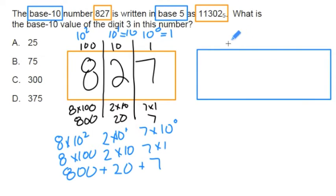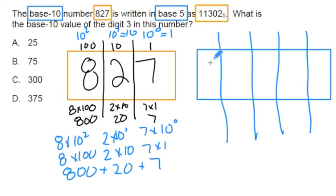There's 1, 2, 3, 4, 5 place values here. So I'm going to make 5 lines. It gives me the digits: we got a 1, a 1, a 3, a 0, and a 2. And guess what? We're looking for the 3-digit. What is the value of the 3-digit? The 3-digit here, which means the 3-digit here. That's ultimately what we're trying to figure out, what the value of that 3-digit is.